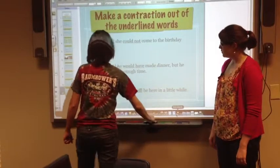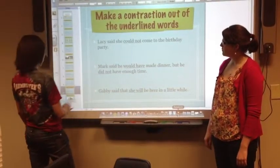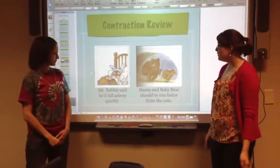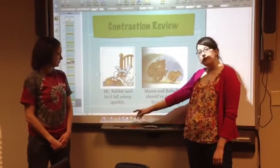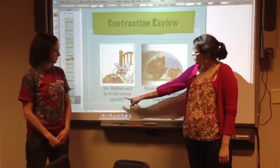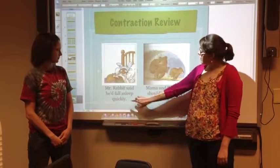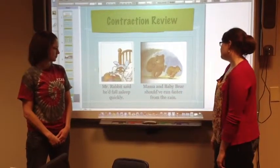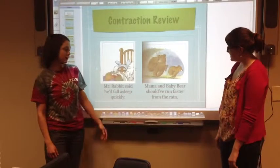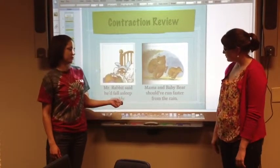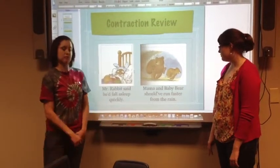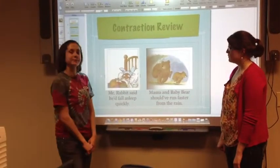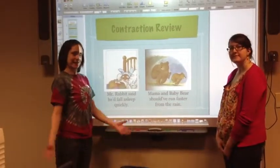For our contraction review: Mr. Rabbit said he'd fall asleep quickly — he would, and we replaced the beginning of would with the apostrophe. And mama and baby bear should have run faster from the rain — should have becomes should've, with the apostrophe where the H-A in have should be. And that concludes the lesson. Thank you.